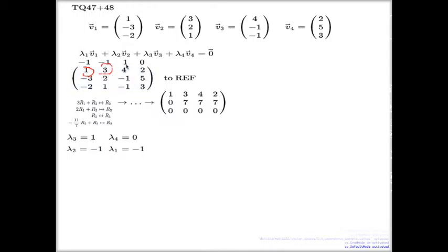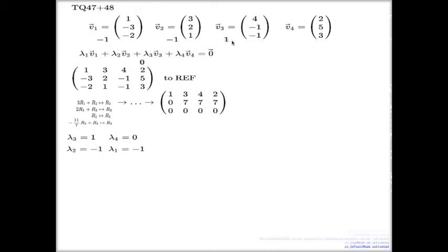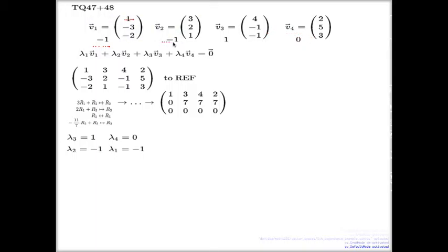Similarly, the second component will be negative 3 times lambda 1, plus 2 times lambda 2, minus 1 times lambda 3, plus 5 times lambda 4. And the third component you can work out similarly. What's important here from the conceptual point: the question we're answering is whether we can come up with a non-trivial choice of lambdas which makes this work. In the context of this one single large vector on the left-hand side equaling the zero vector on the right-hand side, it just comes down to whether we can find a non-trivial solution to this system of linear equations.